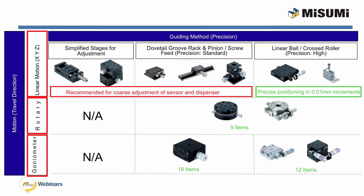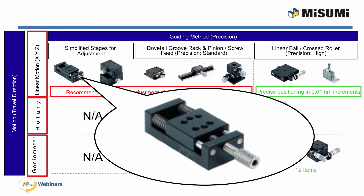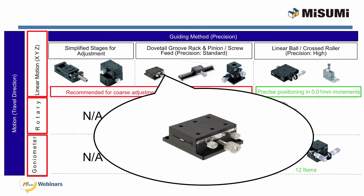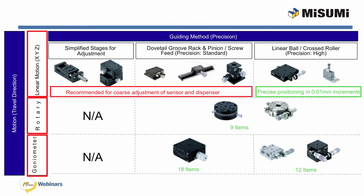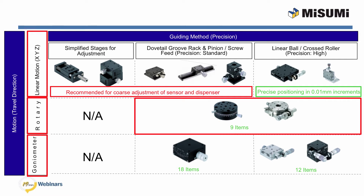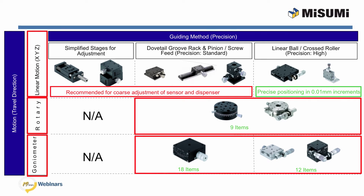As we can see from this table, simplified or standard stages are recommended for coarse positioning applications. For example, they can be utilized for adjusting a sensor or a dispenser. If you are looking to position with higher precision, we offer several high precision types with linear ball guide to handle the load. If you are looking for rotary motion, Misumi offers rotary stages in either a cross roller or linear ball guide. Goniometer stages are offered in two types: standard and high precision, and depending on your application, one of these types will be more suitable.